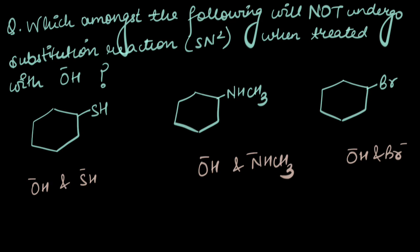In the first case, the negative charge on the sulfur would be more spread out as compared to the negative charge on the oxygen atom. Since sulfur has a larger size, SH⁻ would be more stable than OH⁻. The leaving group being more stable than the attacking nucleophile means the leaving group would leave.